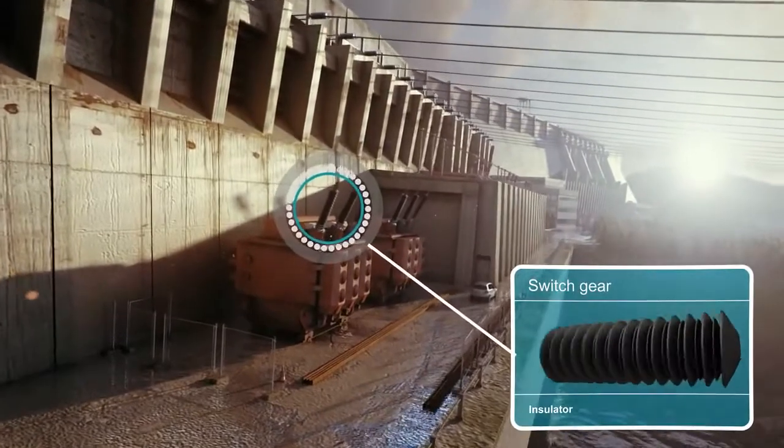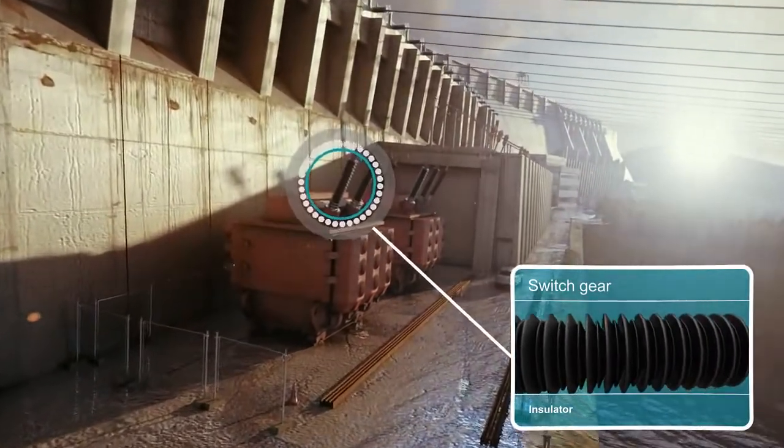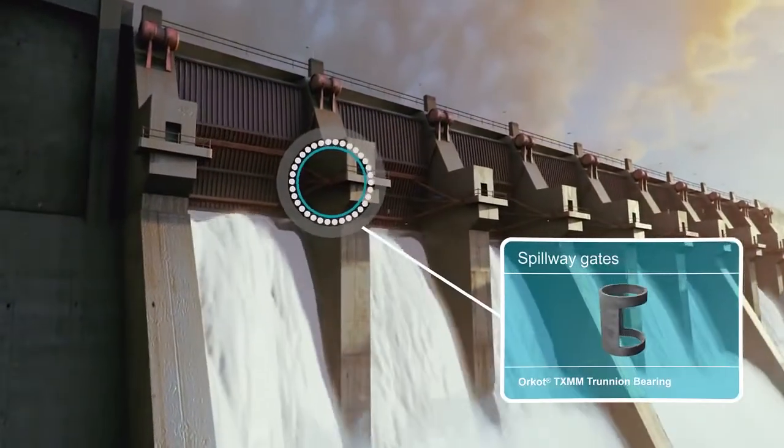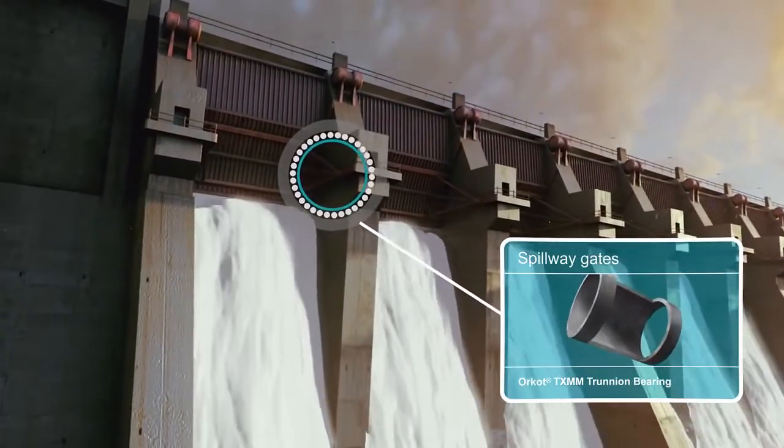Shatterproof silicone insulators ensure safety while maintaining high voltage, while Orcott trunnion bearings on the spillway gates guarantee long life even under the harshest conditions.